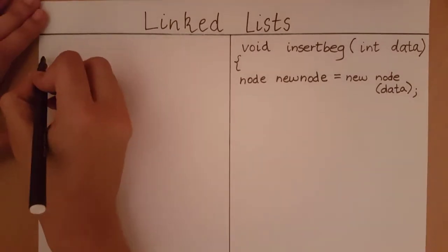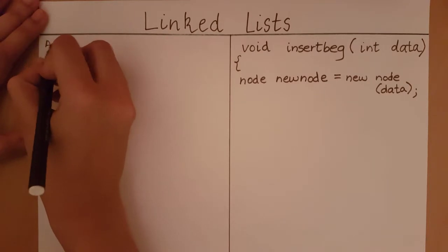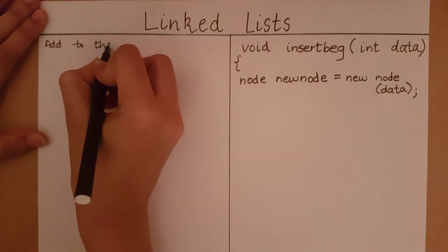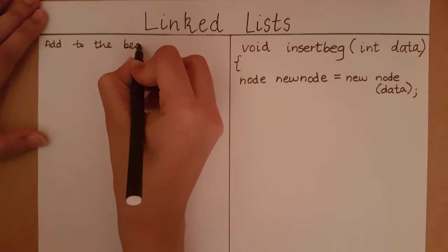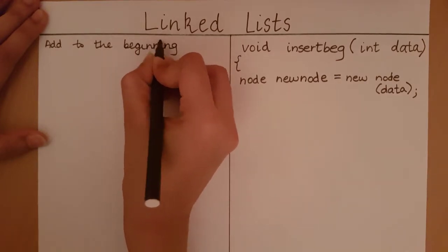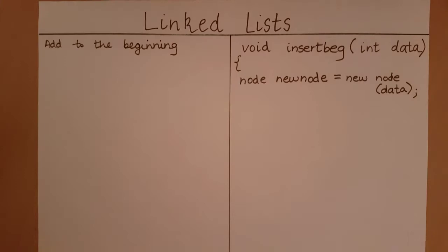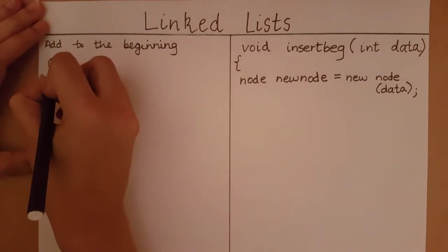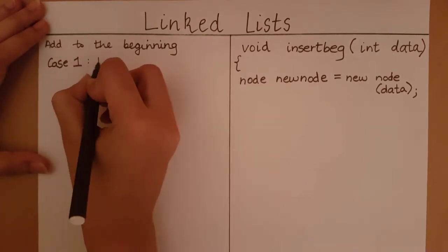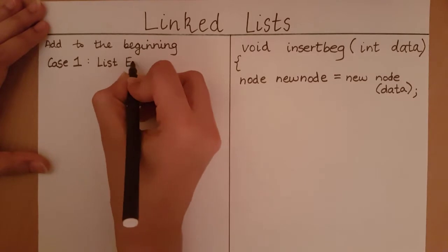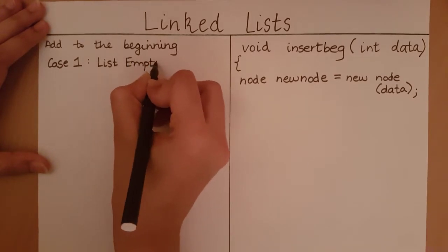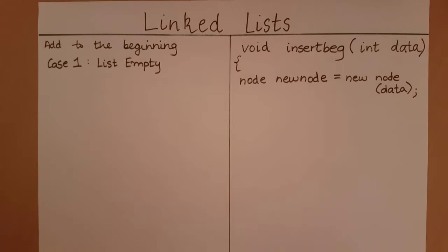The first thing we must check is I need to check if the list is empty. If the list is empty I need to set both my start pointer and my end pointer to the new node we have created.